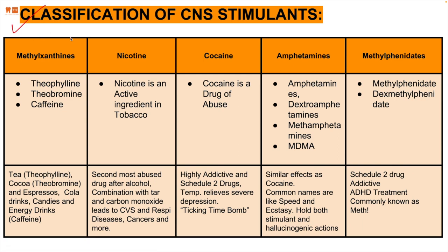Let's classify the CNS stimulants one by one — their chemical groups, subgroup drugs, and origins. Methylxanthines include theophylline, theobromine, and caffeine. Theophylline comes from tea; theobromine from cocoa (chocolate powder); and caffeine from espressos, cola drinks, candies, energy drinks, and regular coffee. All of these increase CNS stimulation.